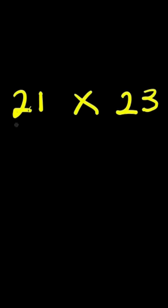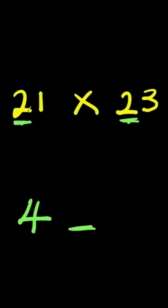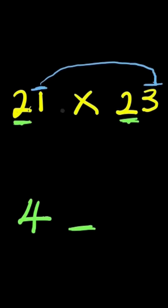So this is how you do it. You multiply the first number here with the first number here, so you have 2 times 2, that is 4. Now you leave a space. You also multiply the last number here with the last number here — so 1 times 3, you have 3.